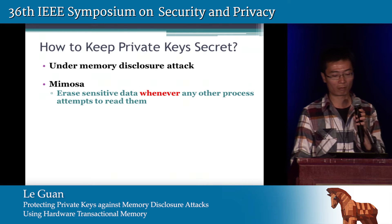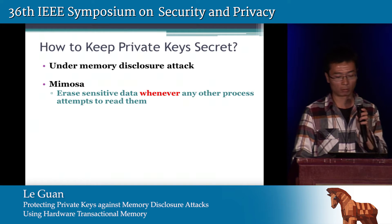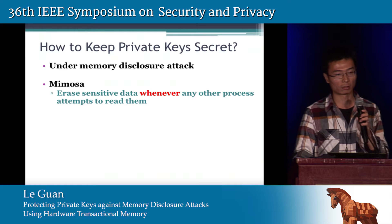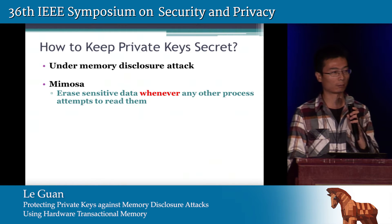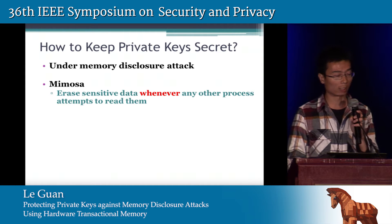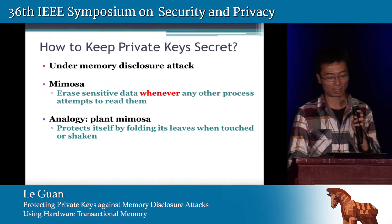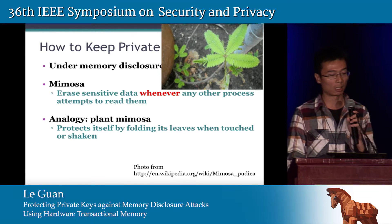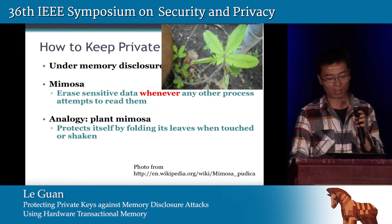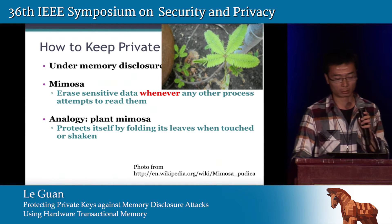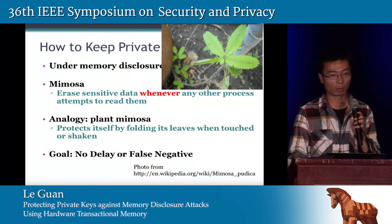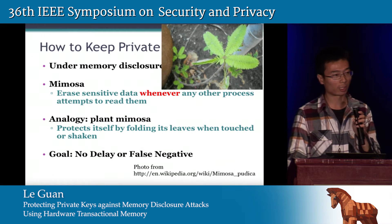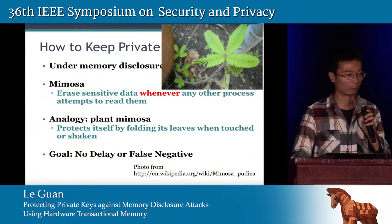So how to keep private keys secret under memory disclosure attack is a big challenge. Here we propose Mimosa, which aims to erase sensitive data whenever any other process attempts to read them. There is a plant called Mimosa that protects itself by folding its leaves when touched or shaken. Similarly, Mimosa protects private keys by erasing them when an attack is detected. Our goal is to detect and prevent such attacks with no delay or false negative — otherwise the key would have been stolen.